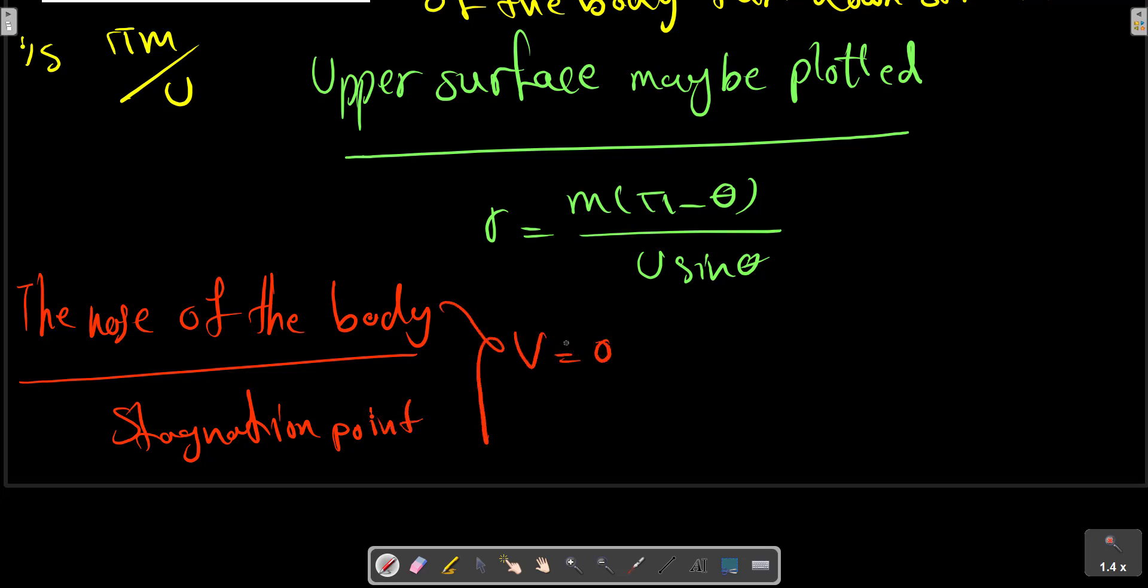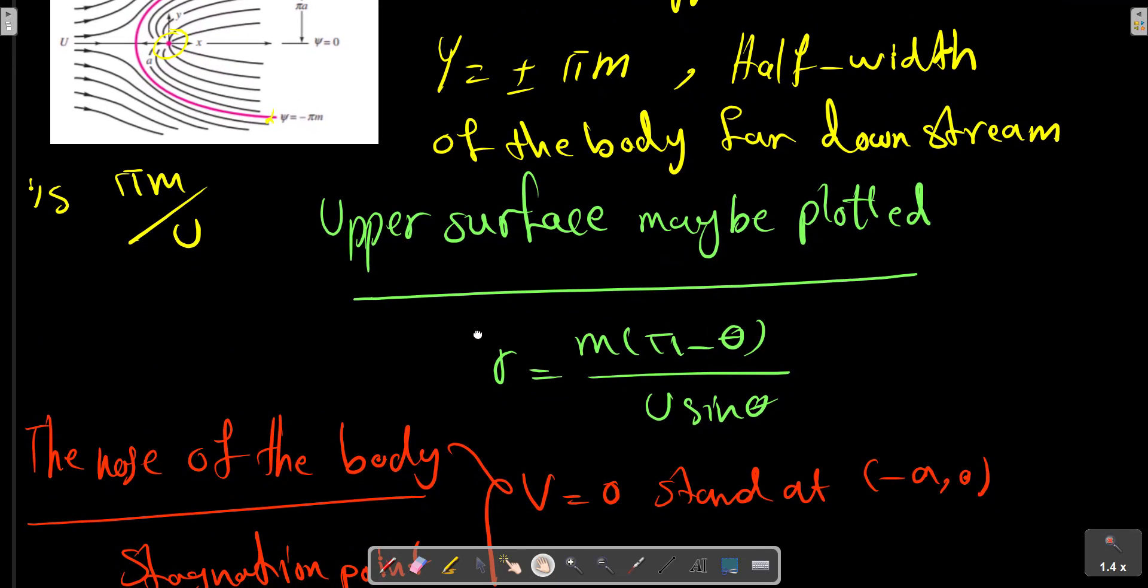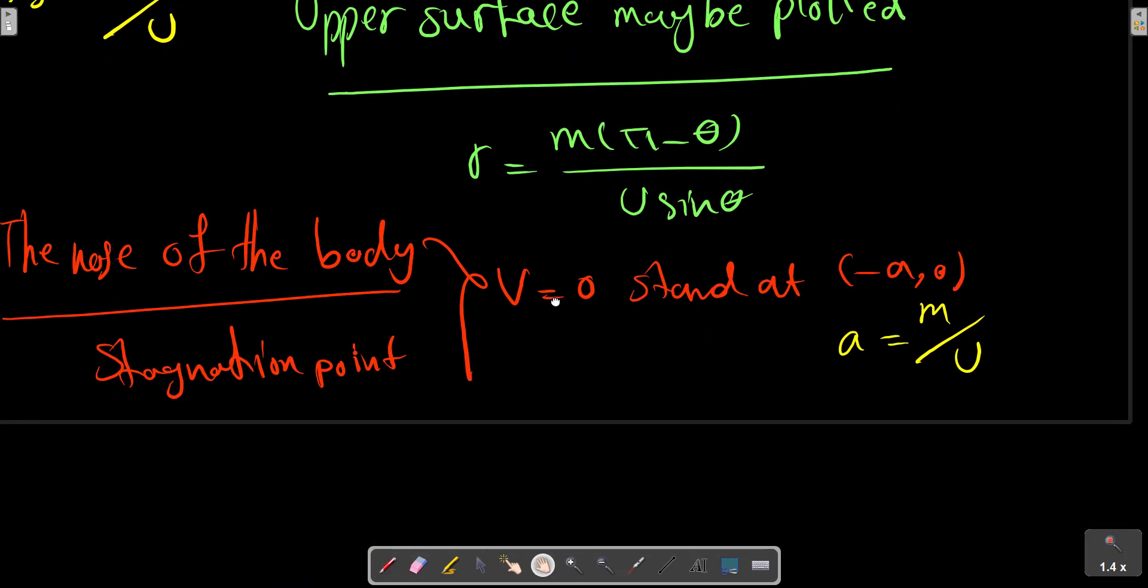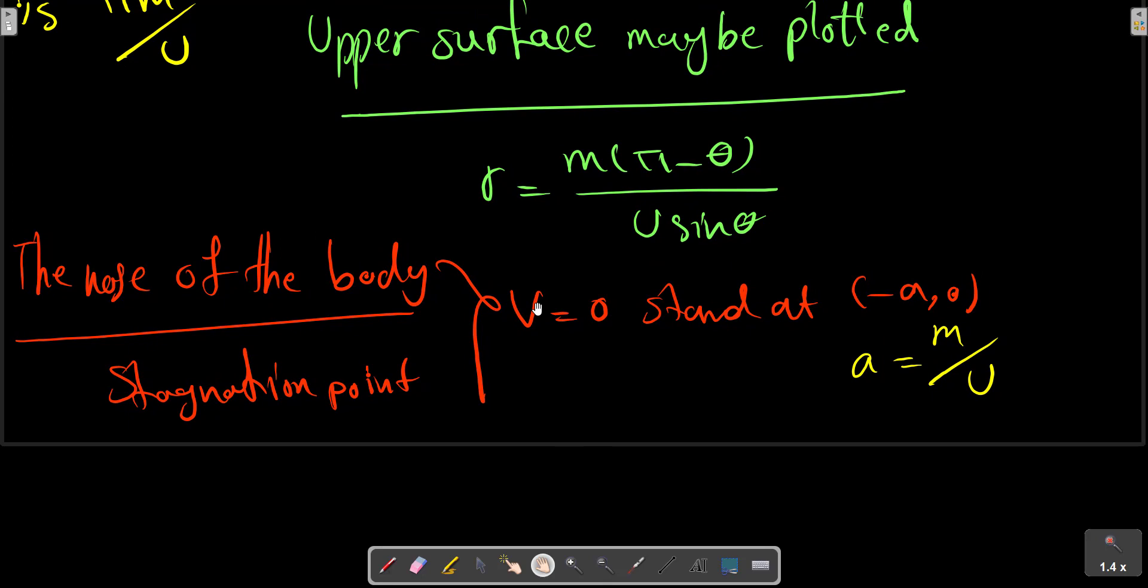V equals zero at this point. As the picture shows, it's at minus A and zero, where A equals M divided by U. U is the velocity of the uniform stream, and M is the strength of the sink.